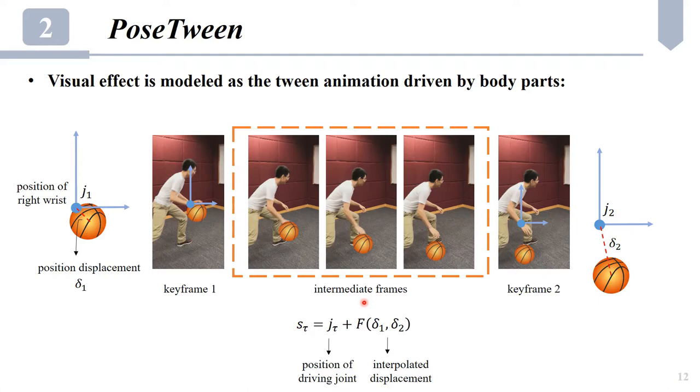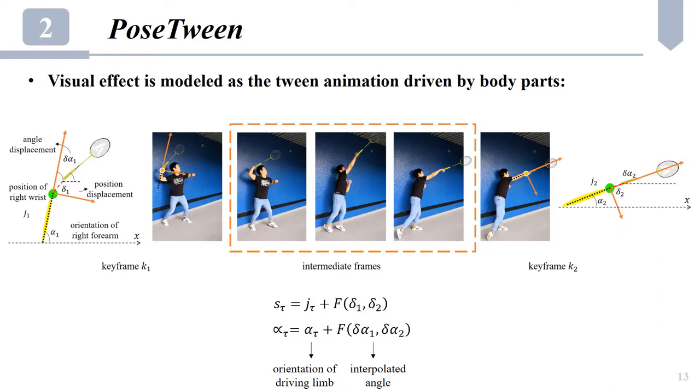Then, at intermediate frames between the two keyframes, the position of the basketball is a combination of the position of the local frame and the interpolated position displacement within the local frame. In this way, the use of the joint position reduces the need to model complex basketball trajectory, while the position displacement in the local frame facilitates the relative motion between the basketball and its driving joint.